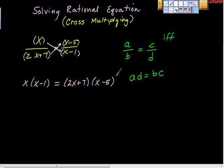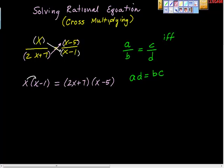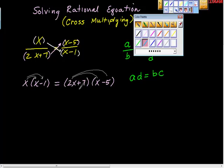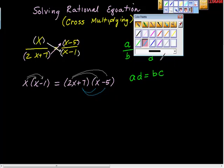Now what? Foil and distribute, right? So we're going to distribute into here, and then we're going to do FOIL here — this times this, and this times this, and then this times this, and then this times this. Isn't that kind of geographically what's about to happen here?